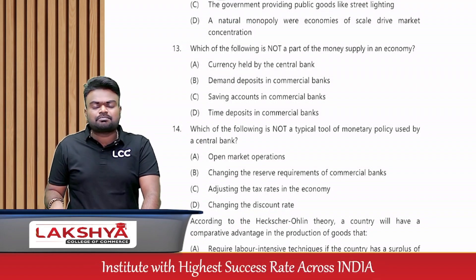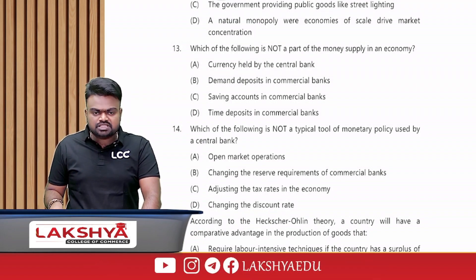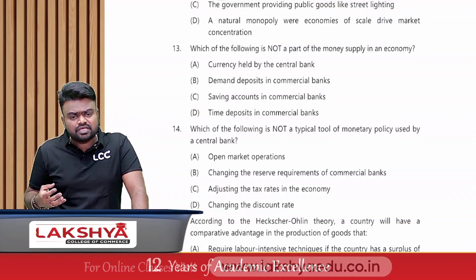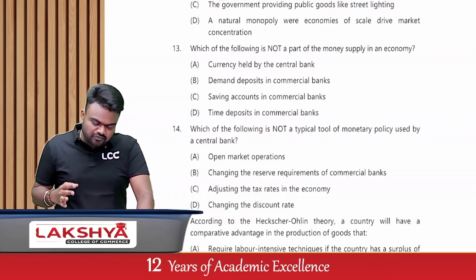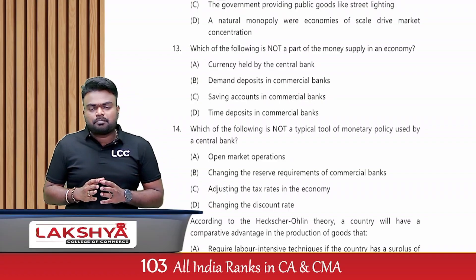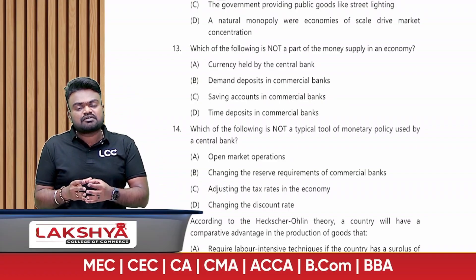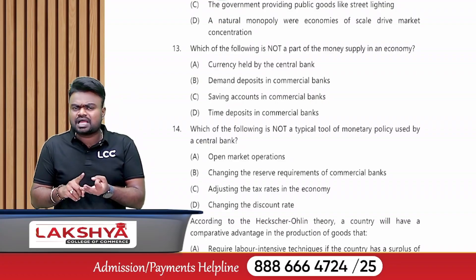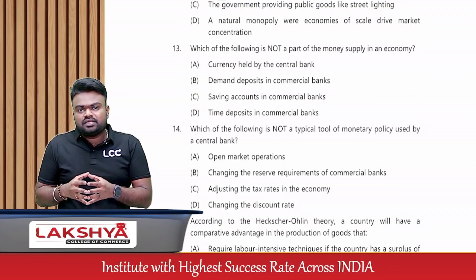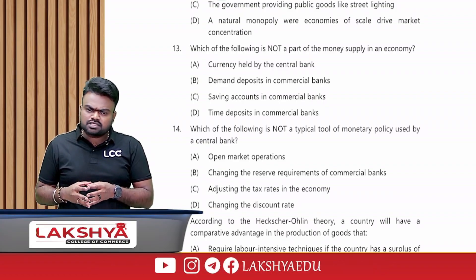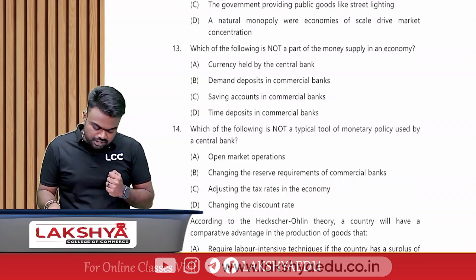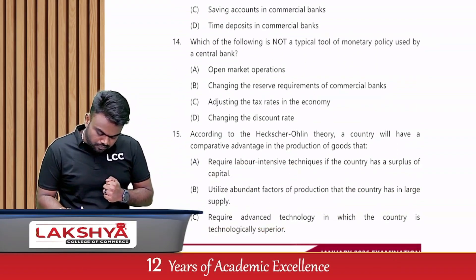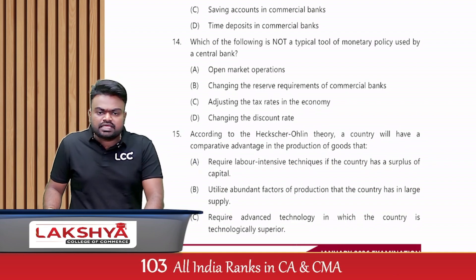Which of the following is not part of the money supply in an economy? The options are: currency held by central bank, demand deposits, saving accounts, and time deposits. Money supply means money available with the public — demand deposits, saving deposits, and time deposits. Money held by the central bank is not money supply. The answer is currency held by central bank.